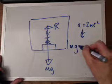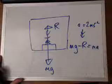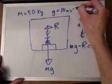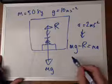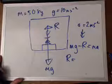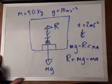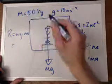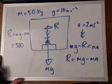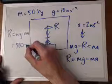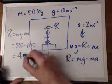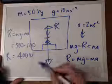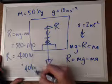You can write mg minus R equals mA. As before, her mass equals 50 kilograms, gravity equals 10 meters per second squared. Rearranging, we get R equals mg minus mA, which equals 50 times 10 minus 50 times 2, which is 500 minus 100, equal to 400 newtons. So she will feel a weight of 400 newtons. Her weight will still be 500 newtons, of course, but it'll feel as if she's 40 kilograms.